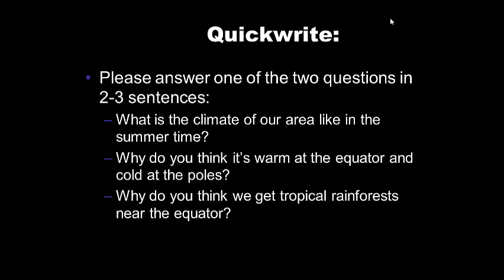For your quick write — five easy points — answer these questions: What is the climate of our area like in the summertime? Why do you think it's warm at the equator and cold at the poles? Why do you think we get tropical rainforests near the equator? Go ahead and pause if you need more time.